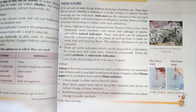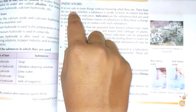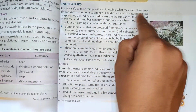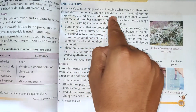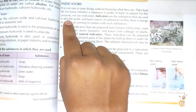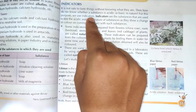Hello, my dear friends, welcome to the YouTube channel Food Tech Buddy by Mudi Dhoka. It is not safe to taste things without knowing what they are. Then how do we know whether a substance is acidic or basic in nature? For this purpose, we use indicators.